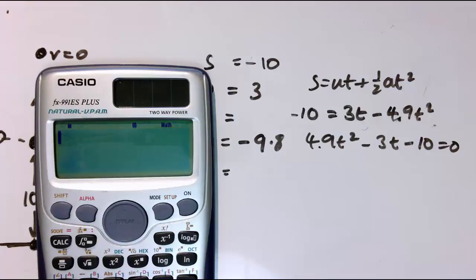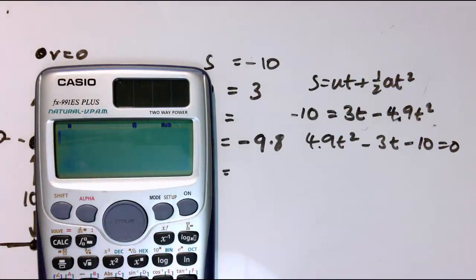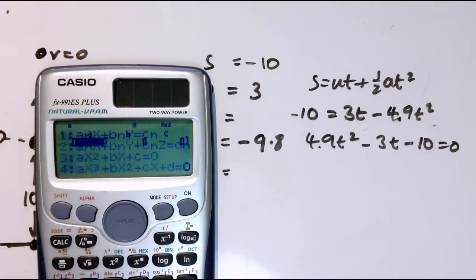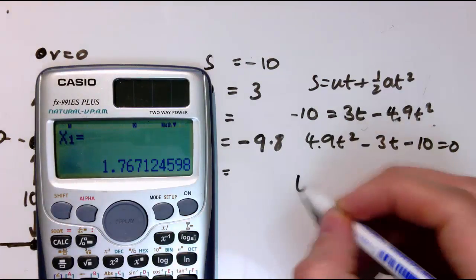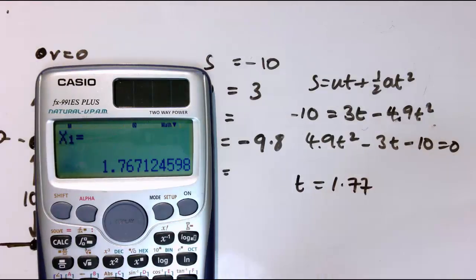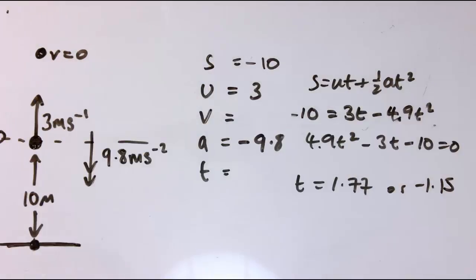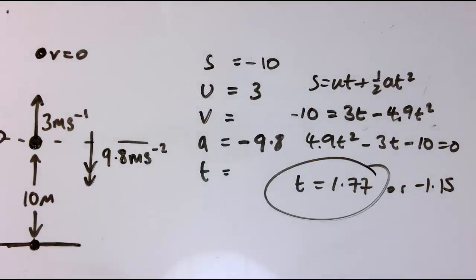The simplest thing to do, I guess, is to use the calculator, if you've got it, and use the quadratic solver, number 3 here, and put in the coefficients 4.9 minus 3 and minus 10. And I get the answer that t equals 1.77 there, or minus 1.15. And so clearly the answer that we want is 1.77, it's going to be a positive amount of time it takes to go forward there.